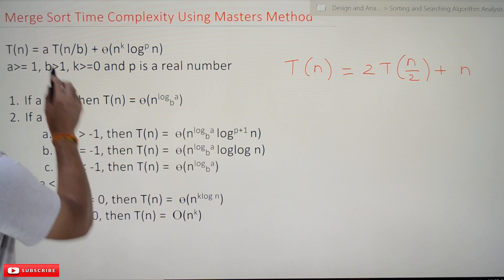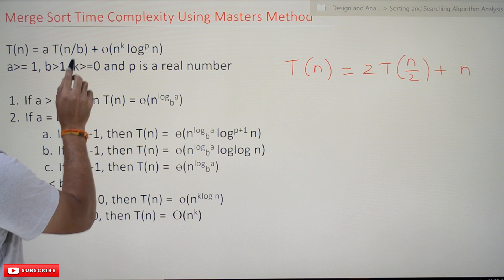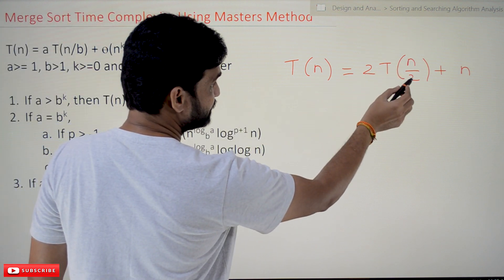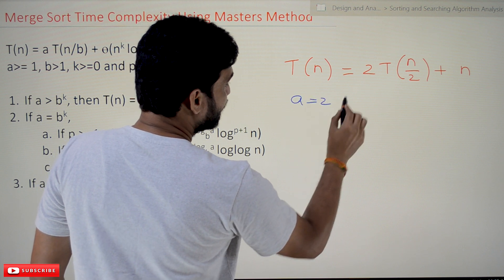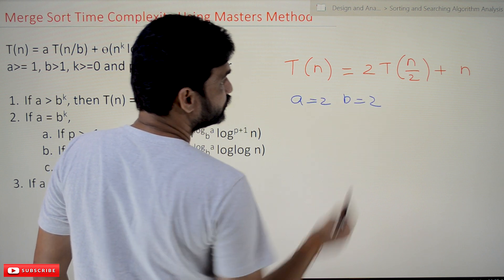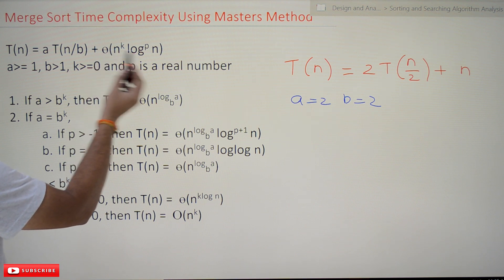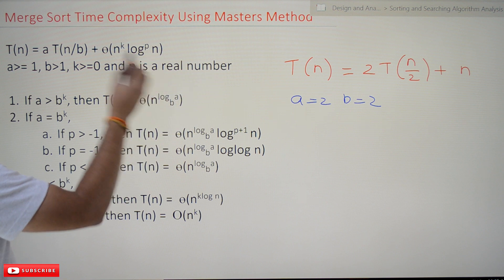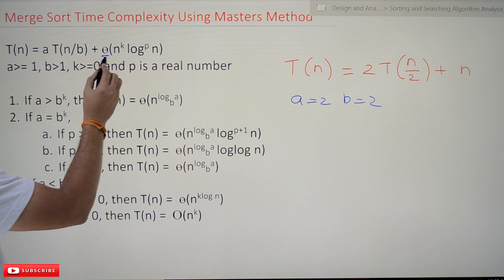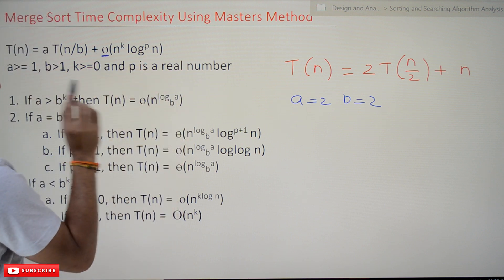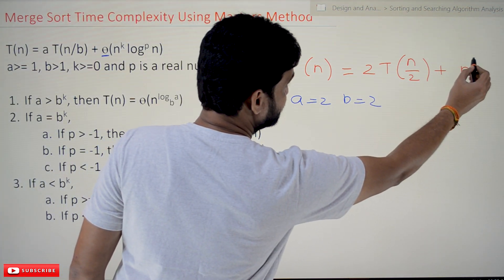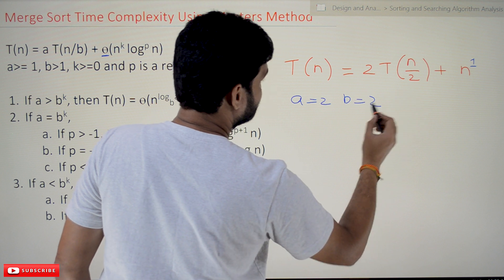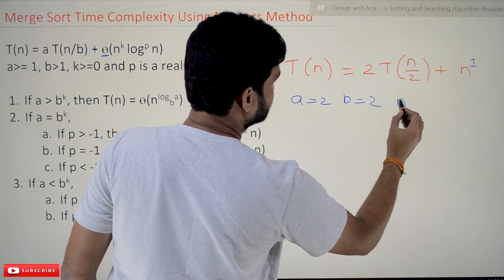So here, a·T(n/b), is it in that form? Yes, 2·T(n/2). See here, a is equal to 2 and b is also equal to 2. Now theta of—theta in the sense if theta is there or not—this is going to take theta time only. So n number of comparisons are done, so n^k. Here n^1 means the value of k is equal to 1.